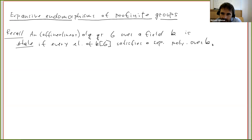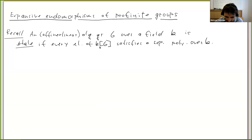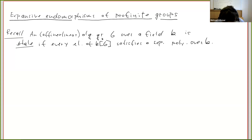In particular, every element of this algebra is algebraic over the base field, but separable is really only relevant in positive characteristic. In characteristic zero, algebraic would be enough to ask here. So that's the definition of an étale algebraic group.